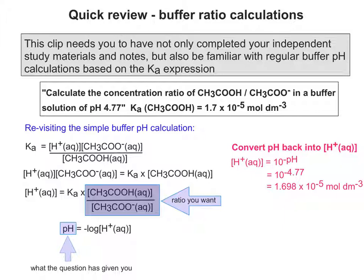So by doing that, you get 1.698 times 10 to the minus 5 moles per decimeter to the minus 3.